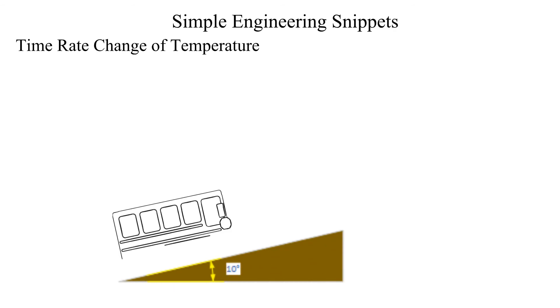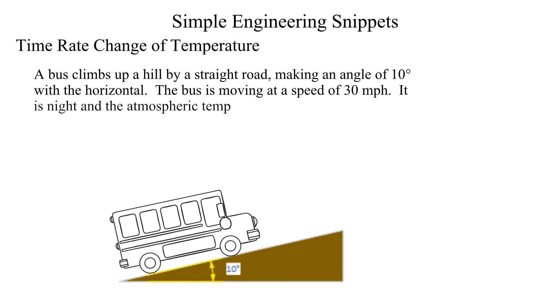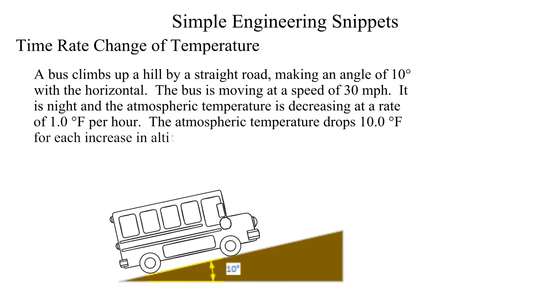Now let's apply the material derivative to temperature which is a scalar quantity. You're riding in a bus with the windows open that is traveling up a hill. It is at night and the local temperature is dropping at a rate of one degree Fahrenheit per hour. The bus is traveling at a speed of 30 miles per hour up a 10 degree incline. Find the time rate of temperature you experience on the bus.